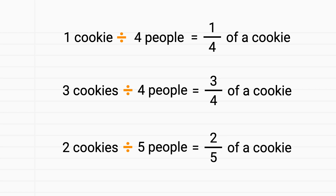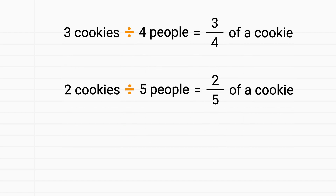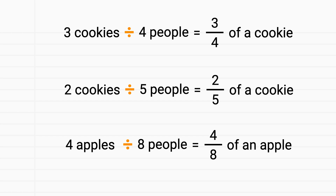Notice how in each of these, the number of cookies became the numerator, and the number of people it was split between or divided by becomes the denominator. And it's not just cookies either — if we had four apples and split them between eight people, each person would receive four-eighths of an apple. These division problems can be written directly as fractions because division and fractions are actually the same thing.